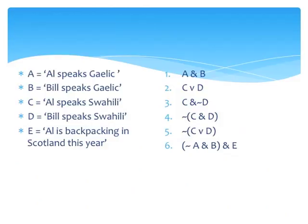Sentence 2 says 'Either Al speaks Swahili or Bill speaks Swahili,' which can be expressed more idiomatically as 'Either Al or Bill speaks Swahili' or 'Either Al speaks Swahili or Bill does.' Sentence 3 is a conjunction where the second conjunct is a negation. The more direct translation would be 'Al speaks Swahili and it is not the case that Bill speaks Swahili,' but that sounds stilted. A more English-friendly translation would be 'Al speaks Swahili, but Bill doesn't.' Notice that we can use BUT here because there is a contrast between the fact that Al speaks Swahili and the fact that Bill doesn't. Sentence 4 is a negation of 'Al and Bill speak Swahili,' so we can translate it as 'It is not the case that Al speaks Swahili and Bill speaks Swahili,' or better, 'Al and Bill do not both speak Swahili.'